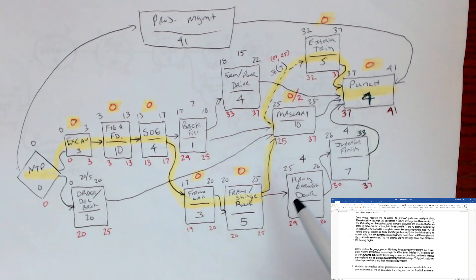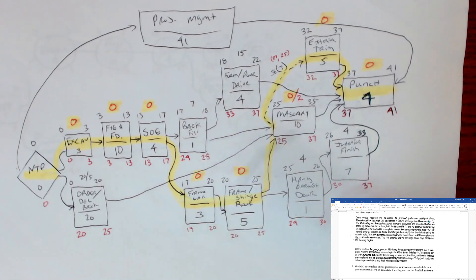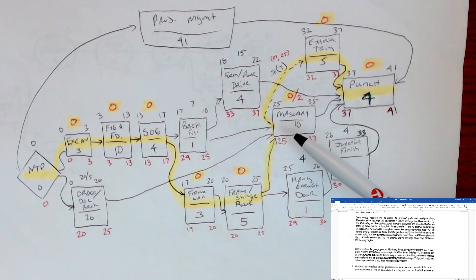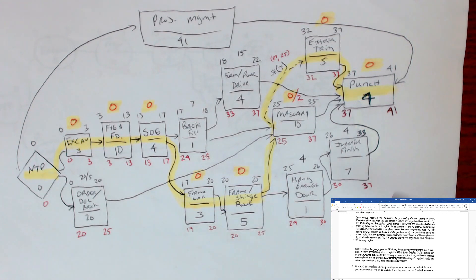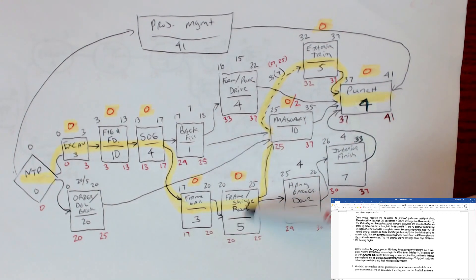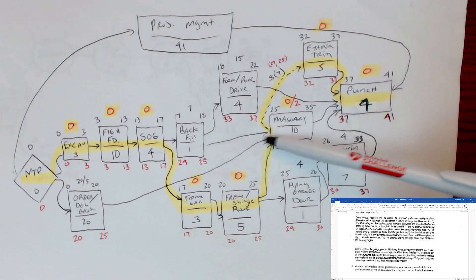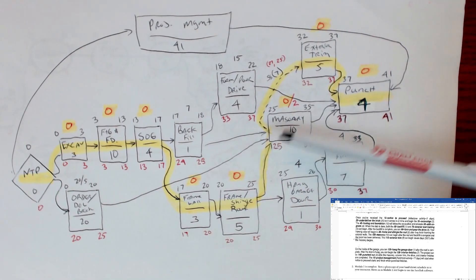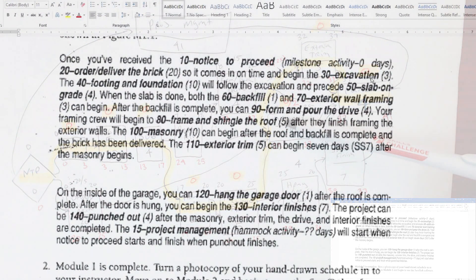After backfill is complete, you can form and pour the driveway. Now here's where it gets a little confusing. Order and deliver goes to masonry because your framing crew will begin to frame and shingle the roof after they finish framing the exterior walls. Masonry can begin after the roof and backfill is complete. We've already established order and deliver goes to masonry.